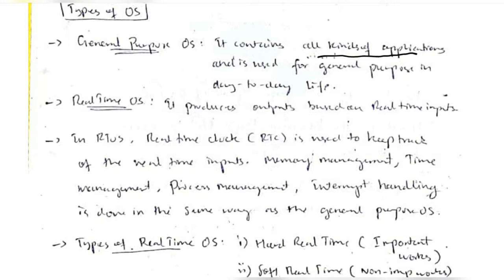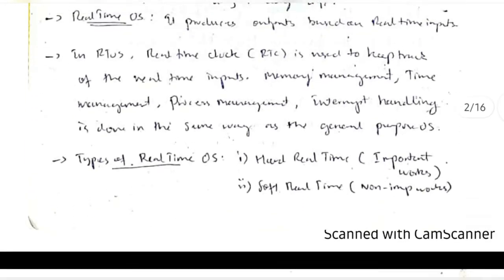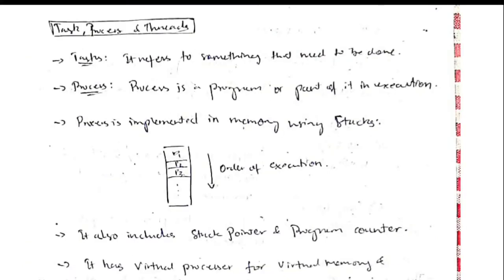There are two types of Operating System: general purpose and real-time. General purpose is used for all kinds of day-to-day applications. Real-time OS produces outputs based on real-time inputs — for example, watching a live match or breaking news. There are two types of RTOS: hard real-time, used for applications like voice recognition, and soft real-time, used for live matches and events.